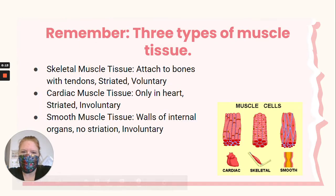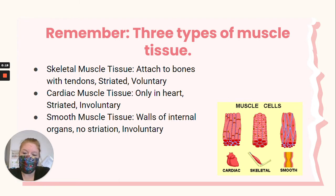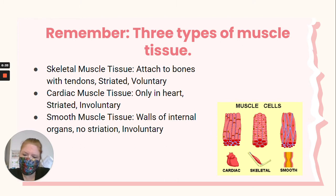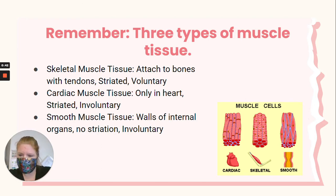Remember, there are three types of muscle tissue. There's skeletal muscle tissue that attaches to your bones with durable connective tissue called tendons. Skeletal muscle tissue is striated and voluntary — voluntary meaning you control it. Then you have cardiac muscle tissue that's only in the heart. It is also striated and has these cool structures called intercalated discs, so they communicate smoothly with each other.